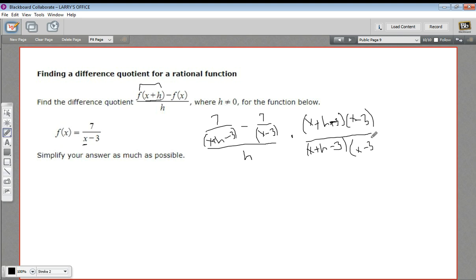Now I'm multiplying by something over itself, so I'm really multiplying this by 1. So I'm not changing anything. On the top, when I multiply each of these fractions by this whole thing, the x plus h minus 3 is going to cancel for this first one. So all I would end up with is just 7 times x minus 3.